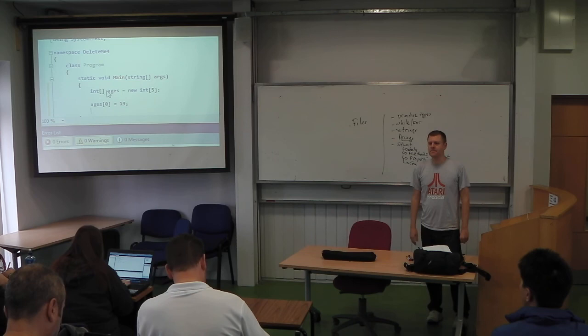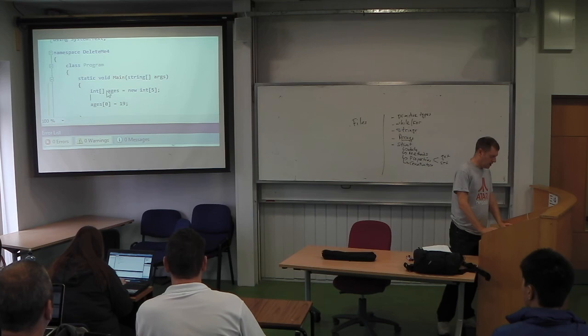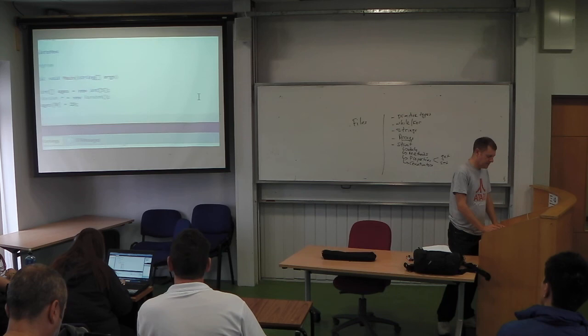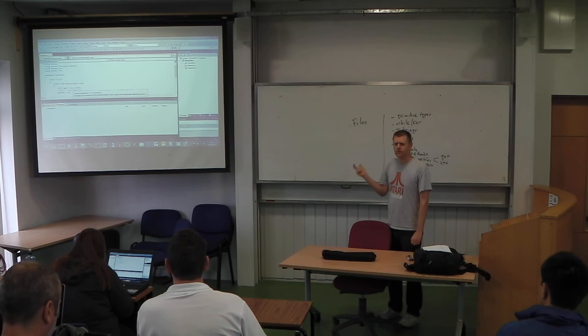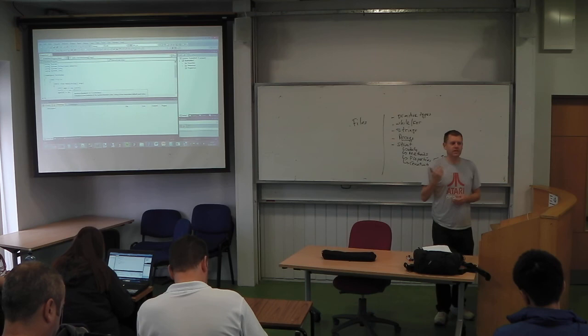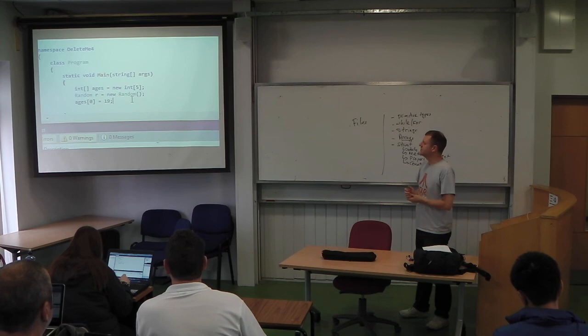Because we were talking about the modulus operator last week, I'll use it to populate this array with random values. In C# there is a class called Random: `Random r = new Random()`. If you hover over it, it says it uses a time-dependent default seed, which is why we get a different sequence of random numbers every time we run the program.